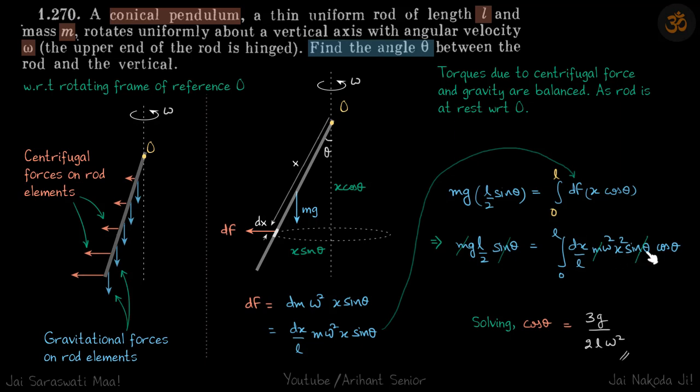Theta is a constant we can take that out, L and omega squared are also constants. Inside you will have x squared dx, so when you integrate that you will get the value of cos theta, which is our answer.